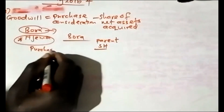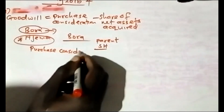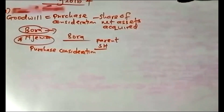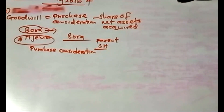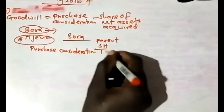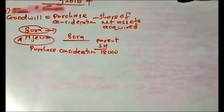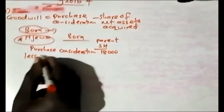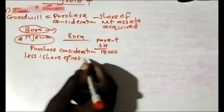We start with the goodwill of BORA using the partial method. Starting from purchase consideration: you were told in Note 1 that on 1st May 2015, Jameer Limited acquired 80% of 11.25 million ordinary shares of shillings 10 each in BORA for shillings 18,000.